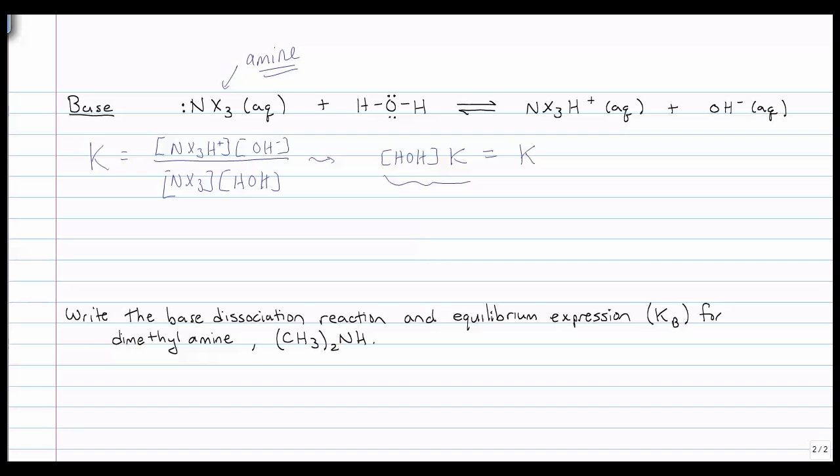All this stuff right here is just a constant times a constant. So let's call it a new constant. We'll call it K, what do you think? How about K sub B? Because we're talking about bases. And that will be equal to just the aqueous portion of our equilibrium expression. So the question is, if you have this on a test, could you do this problem right here? Could you write the base dissociation reaction for dimethylamine and write the equilibrium expression for it? You're given the formula for dimethylamine right here.